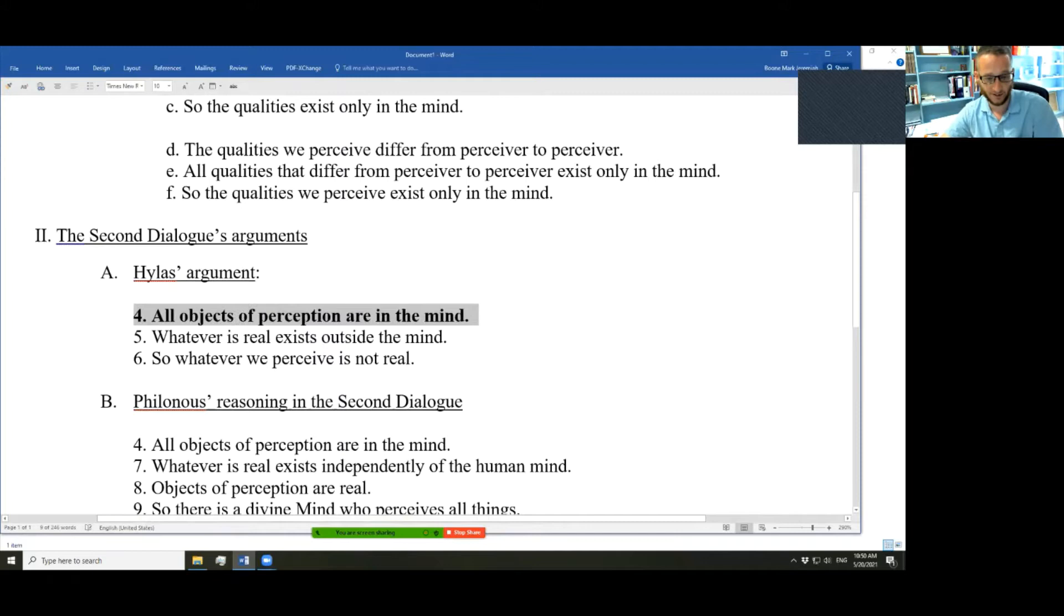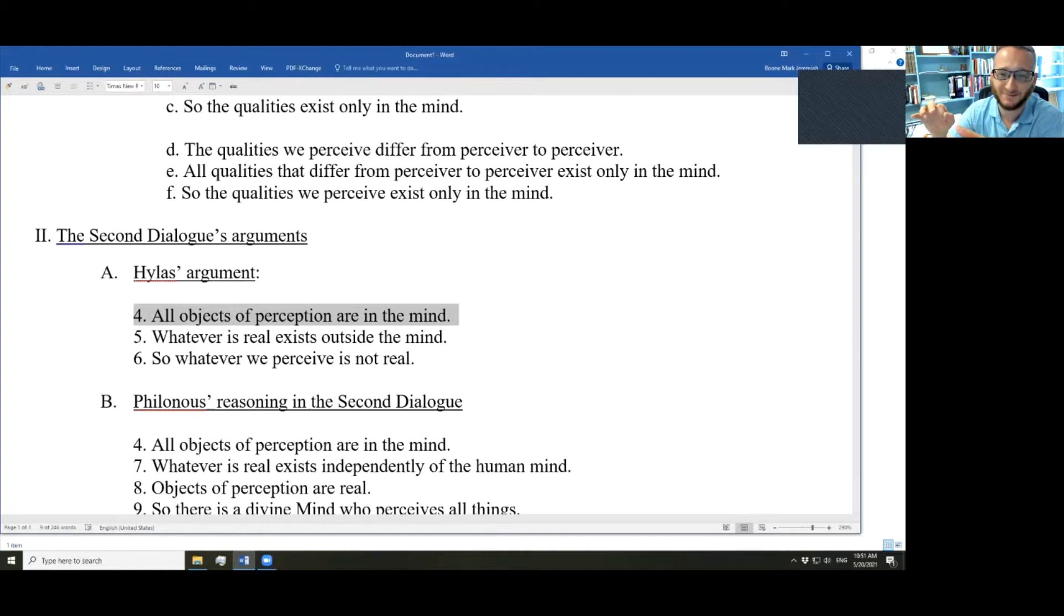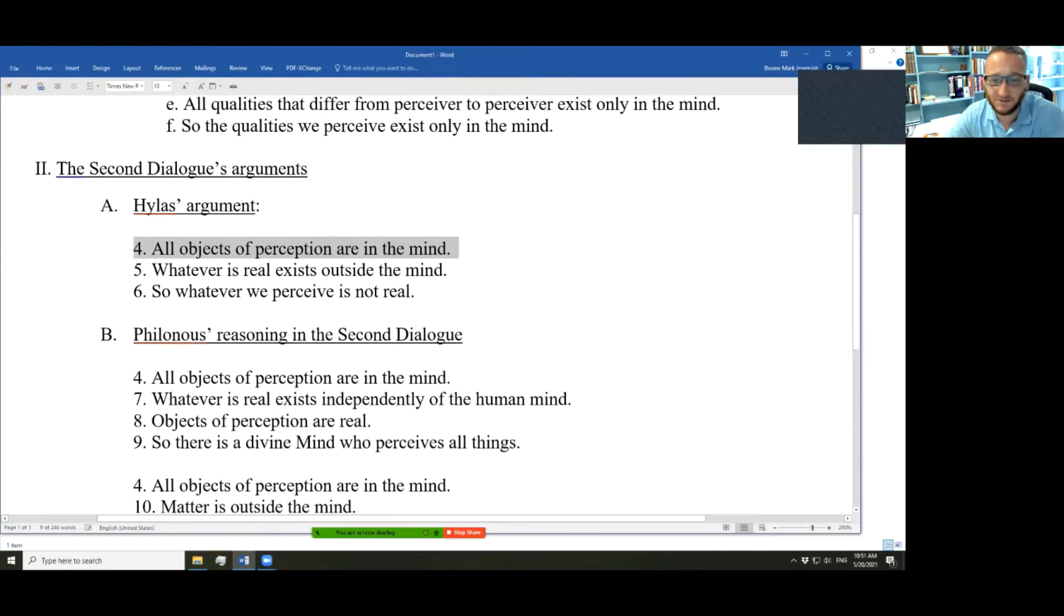We'll use it again here, also in the second dialogue where Philonous enlightens Hylas and helps him to escape his materialism. I mean, perhaps using the word materialism loosely. Usually it means the theory that all is matter. Here, actually, it might be better to say not materialism, but some other word, because Hylas thinks matter exists. And that's the problem. He needs to be enlightened and give up his false opinion that matter actually exists. Okay, anyway, Hylas. Hylas, second dialogue, all objects of perception are in the mind.